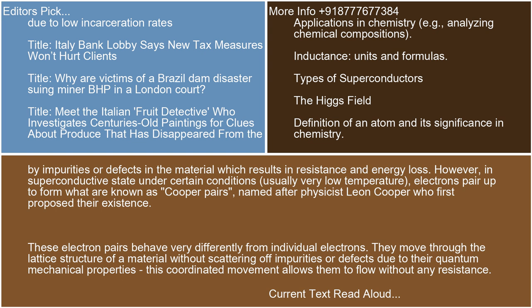These electron pairs behave very differently from individual electrons. They move through the lattice structure of a material without scattering off impurities or defects due to their quantum mechanical properties. This coordinated movement allows them to flow without any resistance.